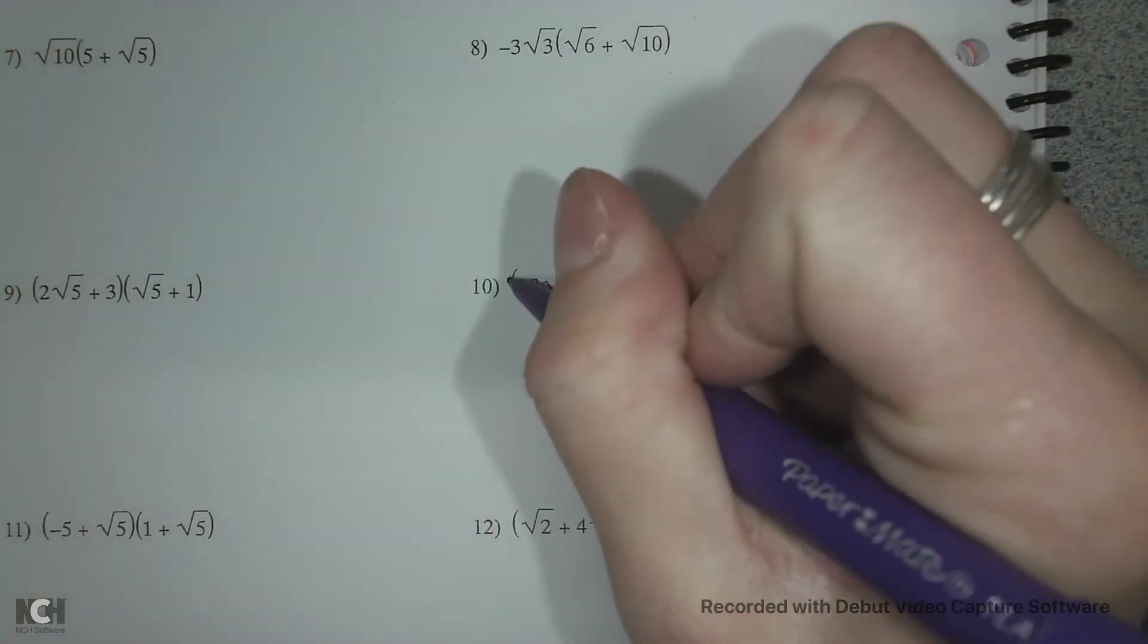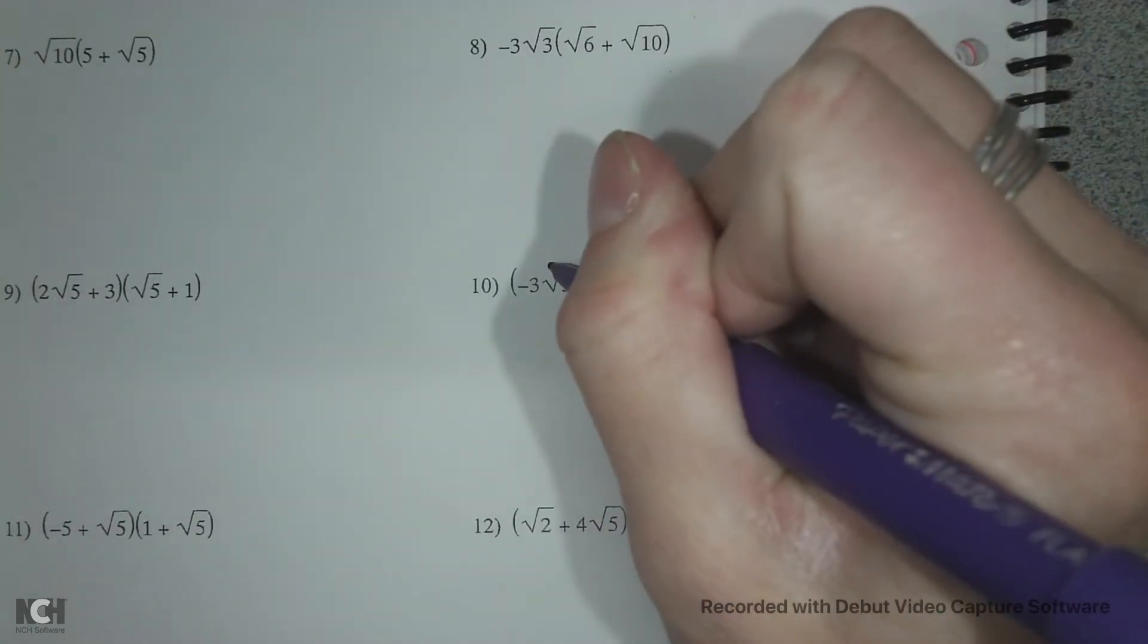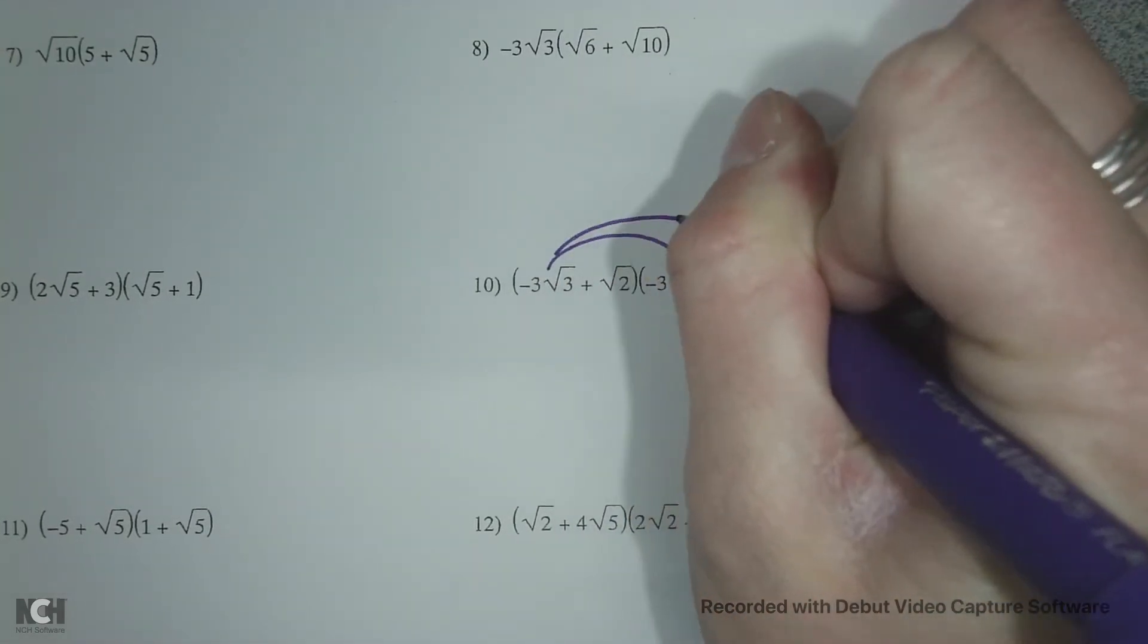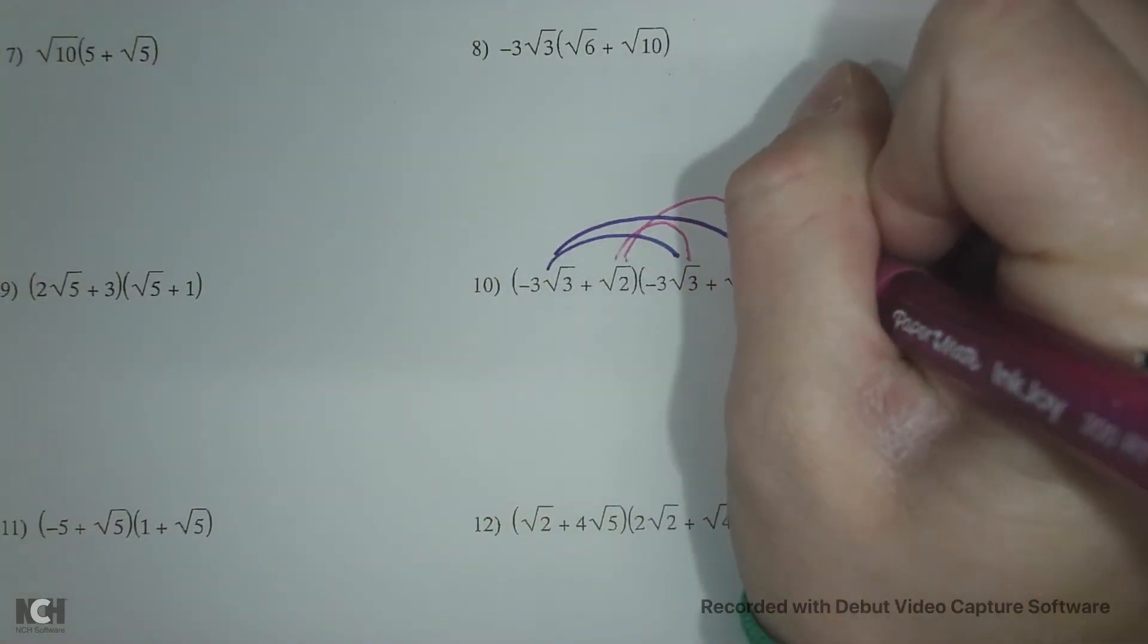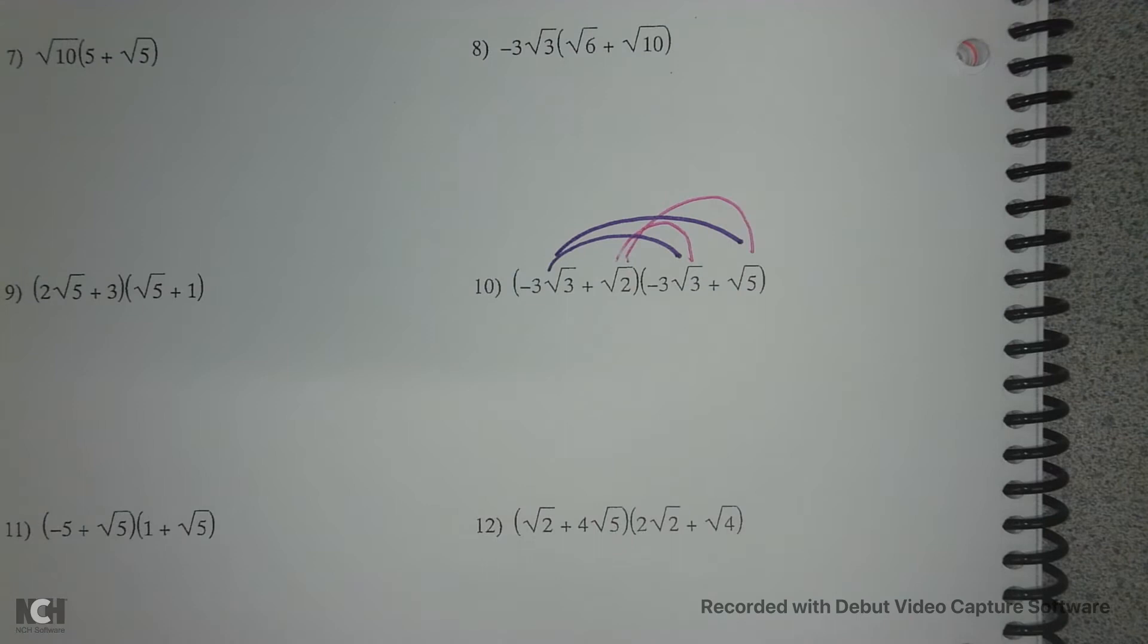Let's look at number 10. Here we are going to do fancy distribution, this is also known as foil. But we're just going to multiply the terms one at a time. So we're going to multiply this term by the two others, and then we're going to multiply this term by the two others, and then combine our answers and see what we've got.